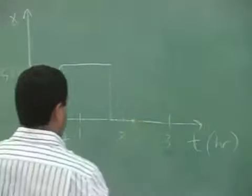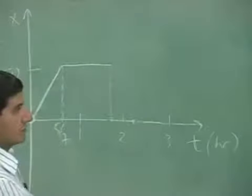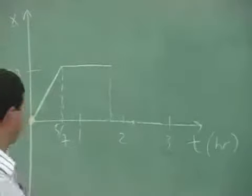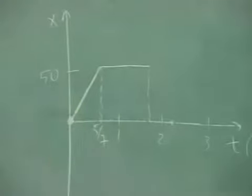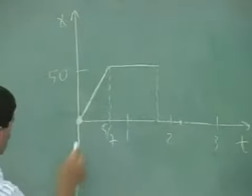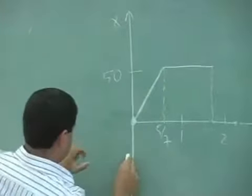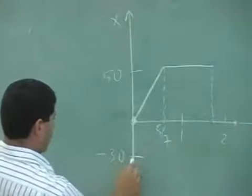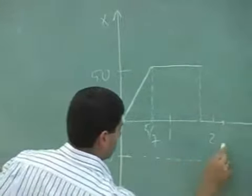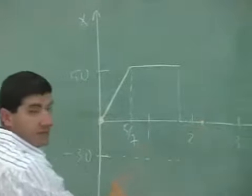So, by the time it gets right here, so, where does it end up? At negative 30, right? It goes back 80. So, its final position is negative 30. So, to scale, that would look somewhere about here. So, by the time you get to two and something hours.